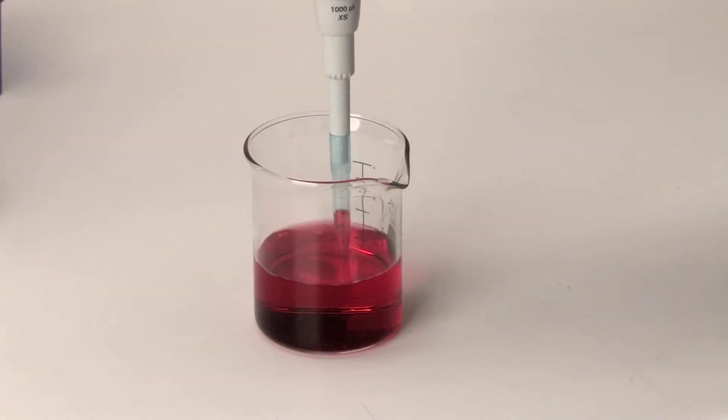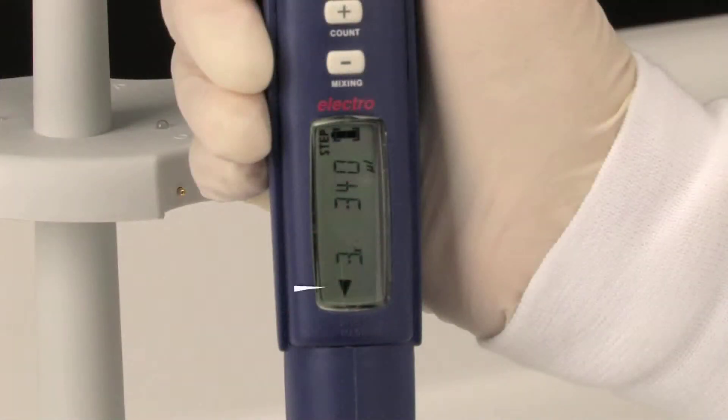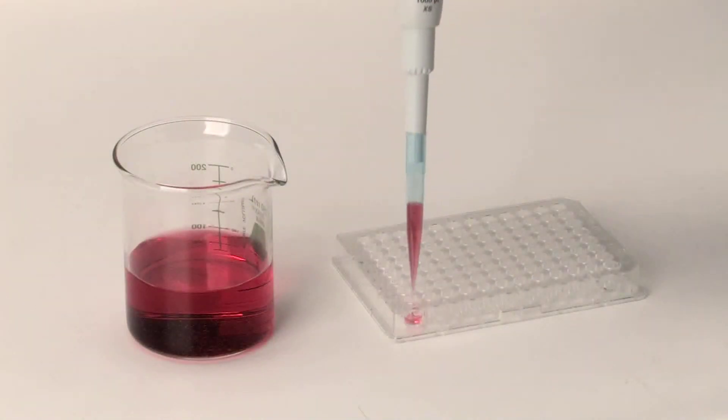Push the start button to begin aspiration. The display with the triangle pointed down shows that the unit is ready to dispense. Simply push the start button to begin first dispensing. Every subsequent dispensing reduces the number of remaining aliquots.